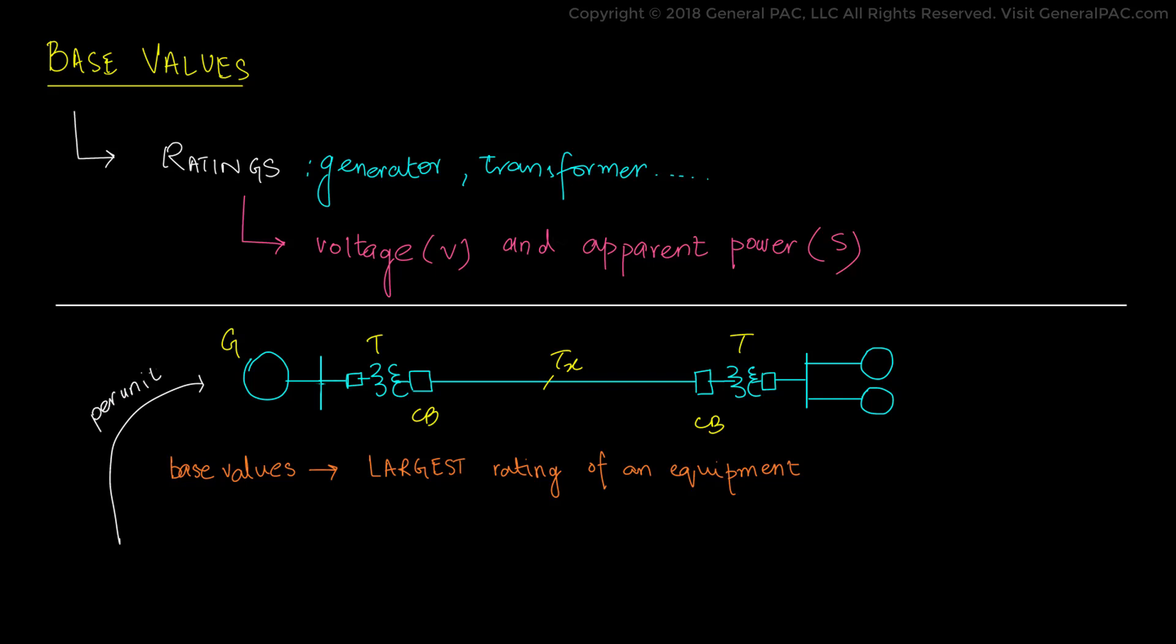Now to convert a power system into a per unit equivalent, we require four values that are the voltage base, the current base, the impedance base, and the power base.